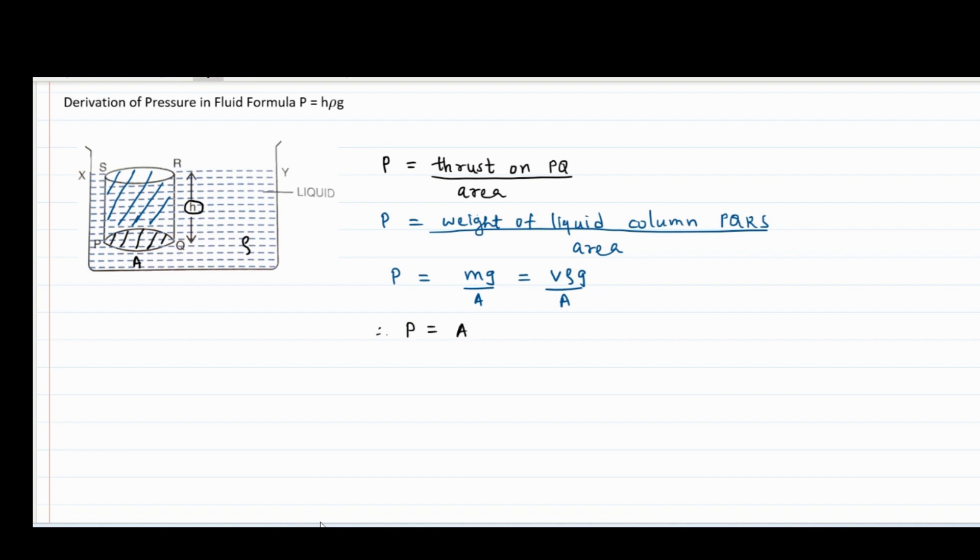Now volume is area into height. So we can say pressure is A H rho g upon area. Area of the surface PQ and area of the liquid column PQRS is the same, so we can cancel these two areas and the formula of pressure becomes P is equal to H rho g.